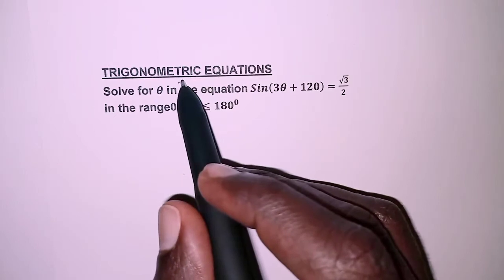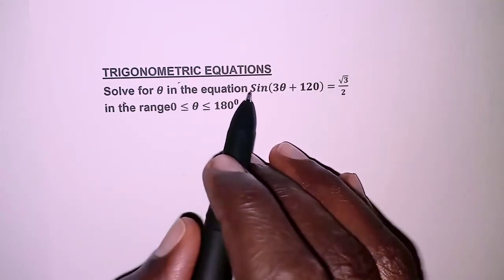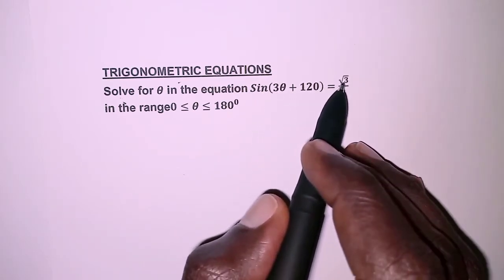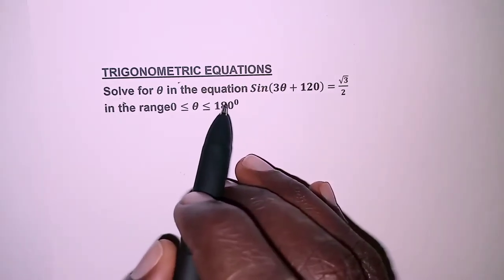The question today is on trigonometric equations and reads: solve for theta in the equation sine(3θ + 120) = √3/2 in the range 0° to 180°.